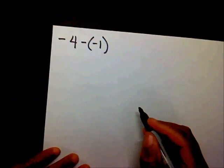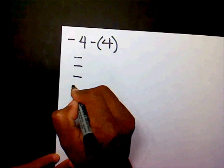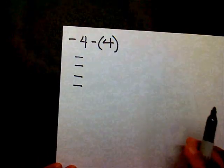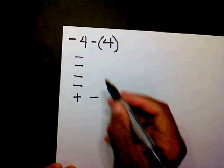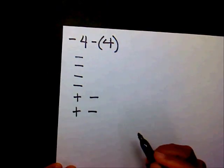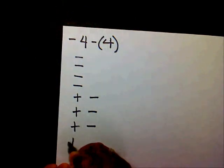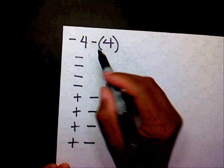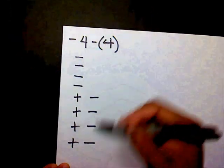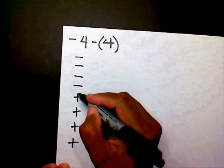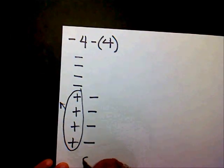Here's another problem. I have four negatives and I want to subtract four positives. Can I subtract four positives? No, so I need to add a zero — then another zero, another zero, another zero. Now my problem is negative four minus four, and I still have negative four here because I just added zeros. So now I can subtract four positives, and what's left is eight negatives.